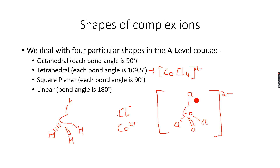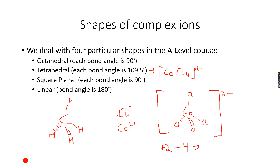They are monodentate ligands because each Cl⁻ ion donates one lone pair of electrons to the Co²⁺ ion. We have an overall charge of 2 negative because we have four Cl⁻ ions contributing a 4− charge and one Co²⁺ ion contributing a +2 charge. Adding +2 and −4 gives us an overall charge of 2 negative on the entire complex ion.